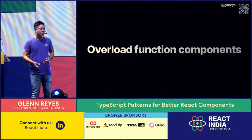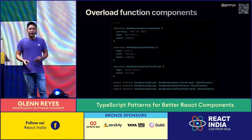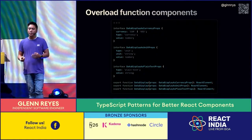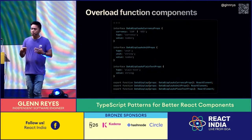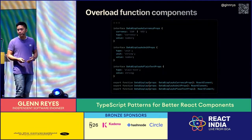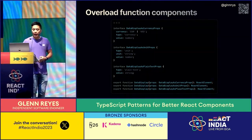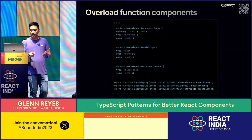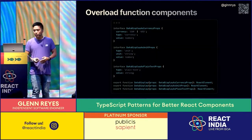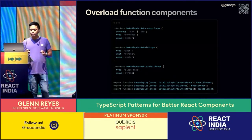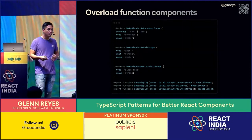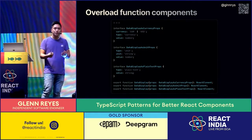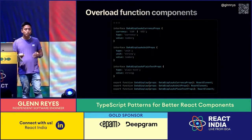Overload function components — similarly to discriminative unions, it's a great way to type props that have related props used in conjunction. For example, a data display component where types related to currency require a number value, but plain text might use a string value instead. Overload function components are very useful for leveraging more robust typing.